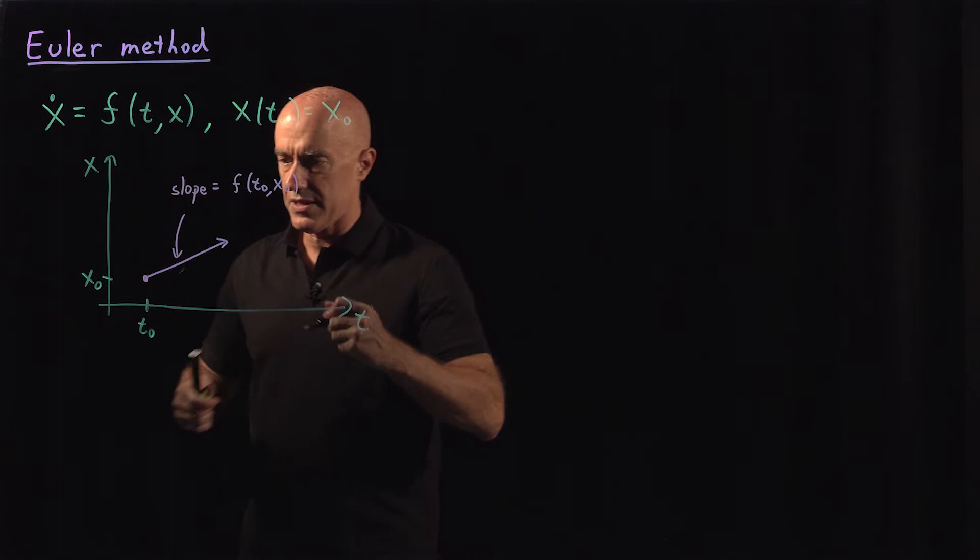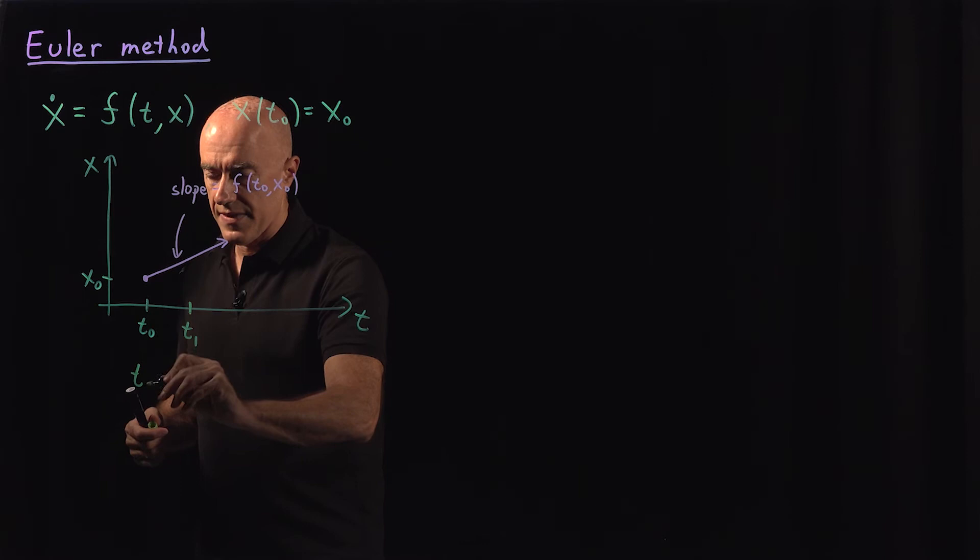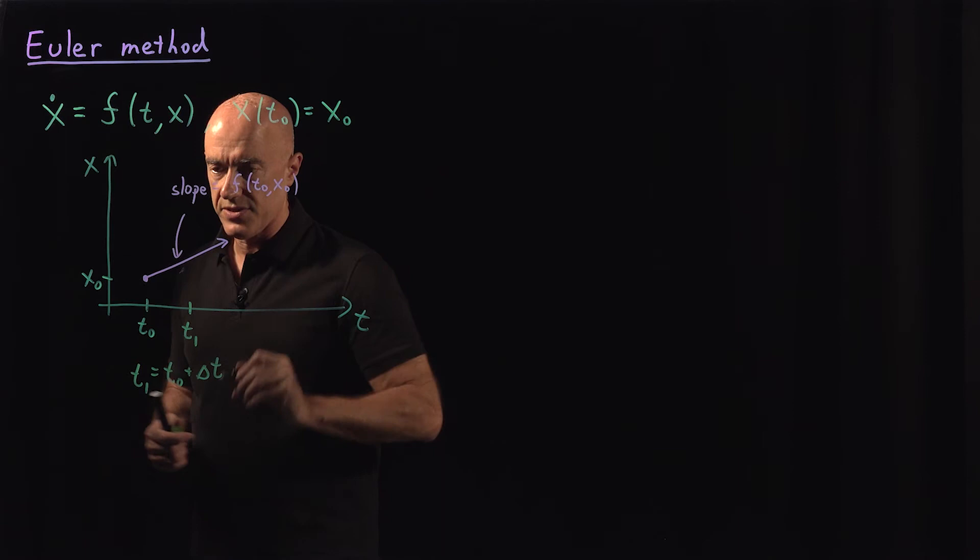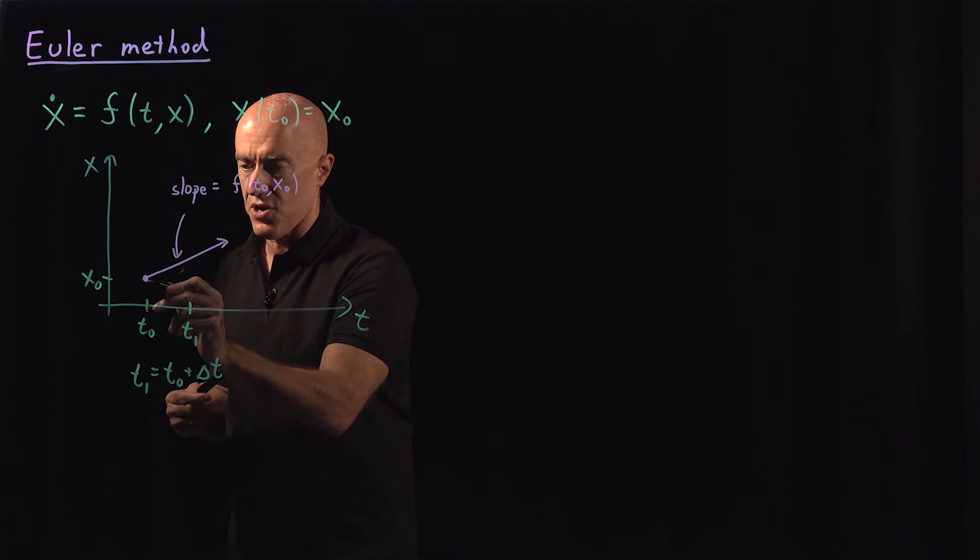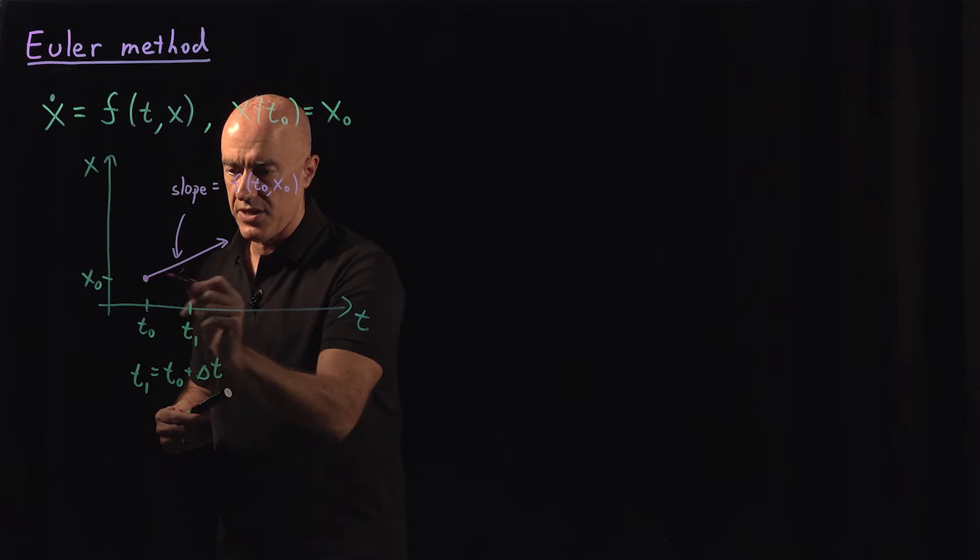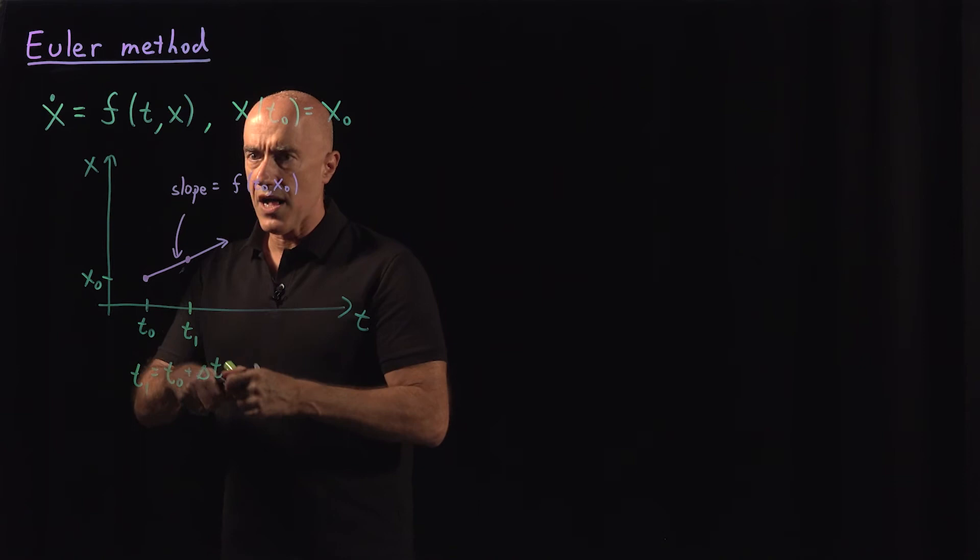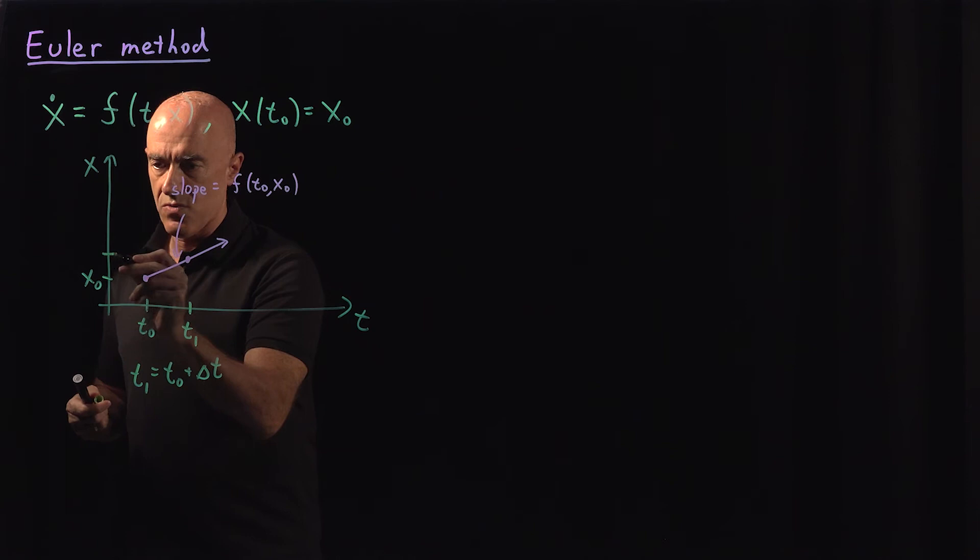Let's say that this is t1, and t1 then is going to be t naught plus delta t. Delta t is considered small. Then we're saying that our solution curve is tangent to here. So we're just going to assume it's linear here, and we get to this value here. So following the tangent line. And this value here we'll call x1.